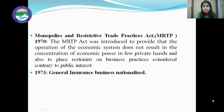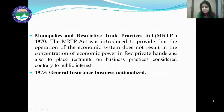Then came the Monopolies and Restrictive Trade Practices Act, popularly known as the MRTP Act, in 1970. The MRTP Act was introduced to ensure that the operation of the economic system does not result in the concentration of economic power in private hands, and also to place restraint on business practices considered contrary to public interest. This was basically to regulate private businesses so that big private businessmen don't have concentration of economic power. In 1973, the general insurance business was also nationalized.